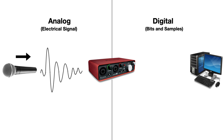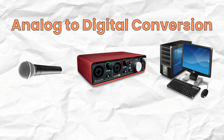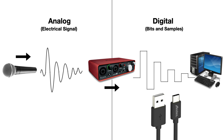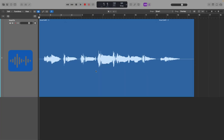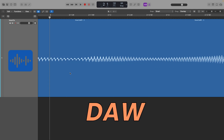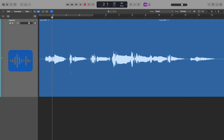After being amplified by the preamp, the audio interface converts the analog signal into a digital format composed of binary data — ones and zeros — that your computer can understand. This conversion process is called analog to digital conversion, or ADC. The digital signal, which now represents the original sound in a format that computers can understand, is then transmitted to the computer typically via a USB cable. Once inside the computer, the digital audio signal can be processed and stored inside a digital audio workstation, or DAW, where you'll see a representation of the performance captured by the microphone as a waveform.